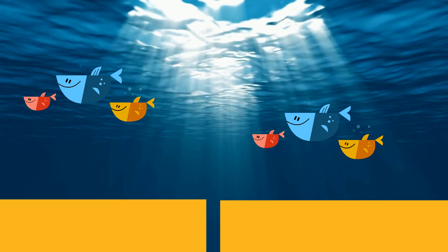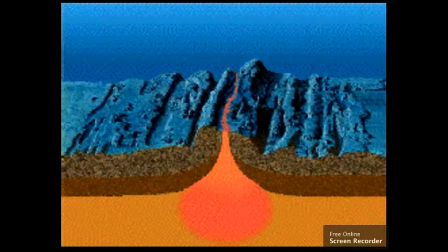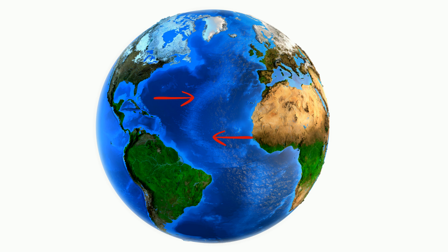Oceanic and oceanic divergent boundaries occur where two oceanic plates move away from one another. This is where seafloor spreading takes place. The most common example is the mid-ocean ridge which stretches around the world.